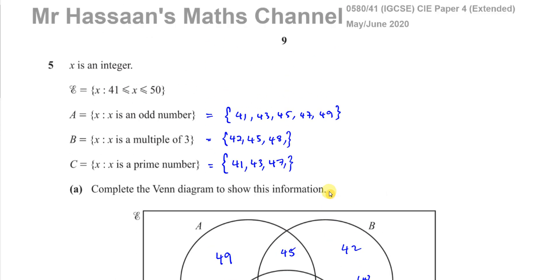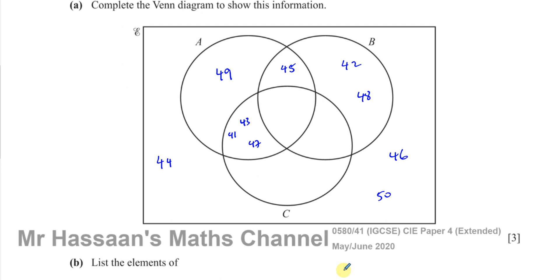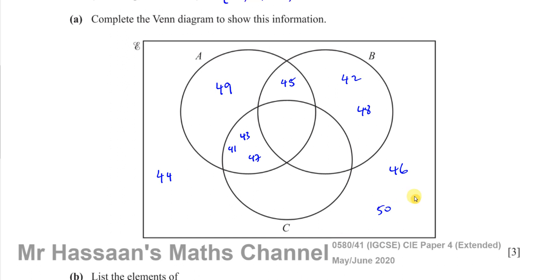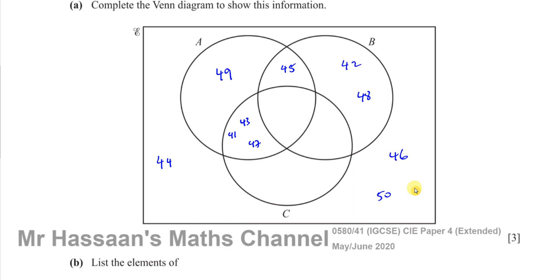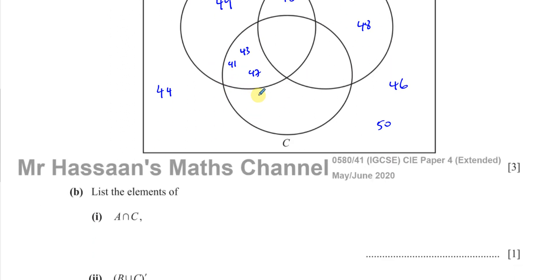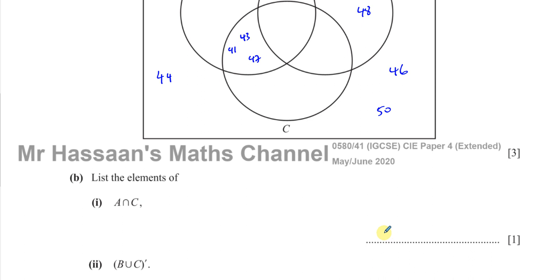That completes Part A of question 5. For Part B, it says list the elements of A intersection C. Those are the elements in the overlapping region of A and C, which are just the three numbers 41, 43, and 47. Written in set notation: {41, 43, 47}.